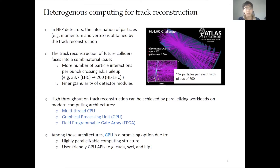For example, in the LHC, the pileup is about 34, but it will increase up to 200, which will introduce 6,000 particles per event in the case of the HL-LHC, and the detector modules will also have a finer granularity which will increase the overall combinatorics.